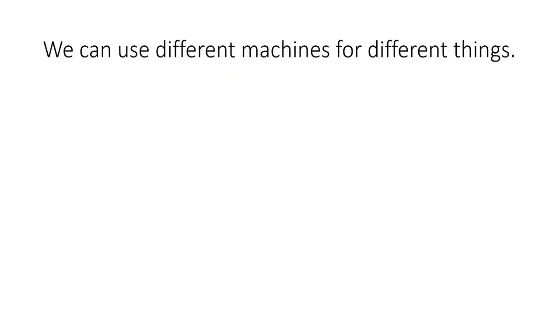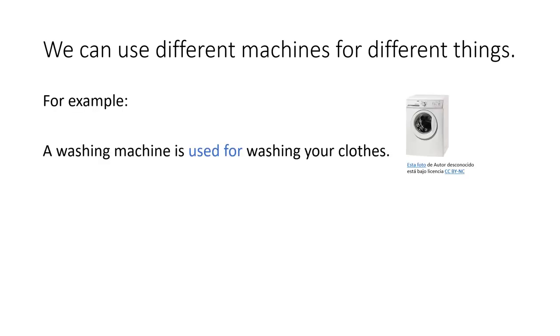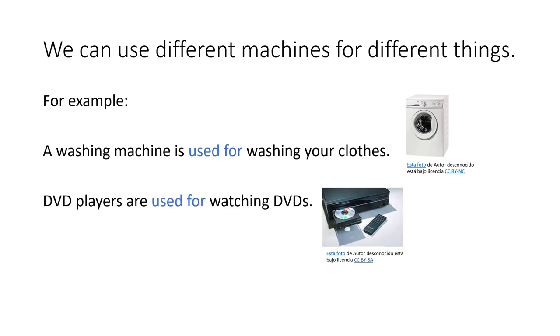We can use different machines in our house for different things. For example, a washing machine is used for washing your clothes. DVD players are used for watching DVDs.